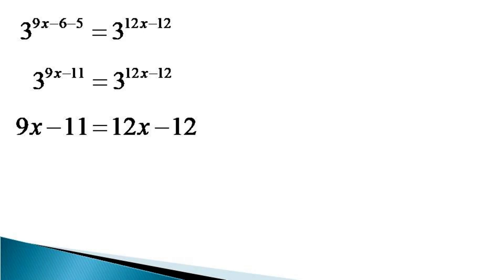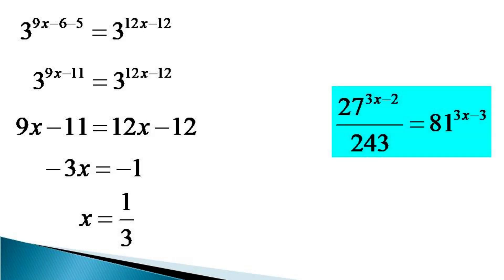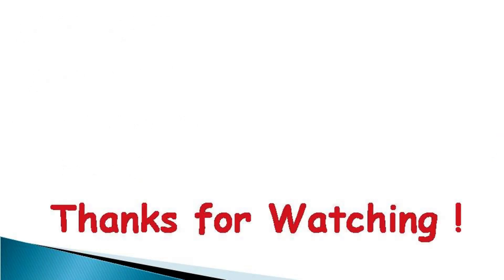Bringing all the constant terms to the right hand side and the variables to the left hand side, we get minus 3x equal to minus 1, and this gives us the value of x as equal to 1/3. It can be verified from the original equation that x equals 1/3 satisfies this equation, and hence x equals 1/3 is a solution to the given equation. Thanks for watching.